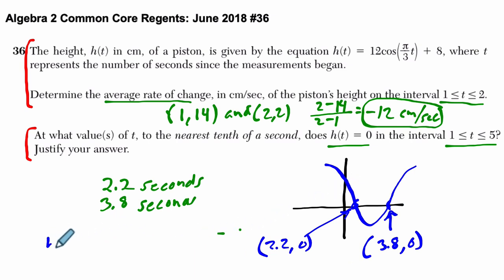To supplement that, I would say h(2.2) = 0 and h(3.8) = 0. If you want to write it, you can say at these two times, the output is 0.